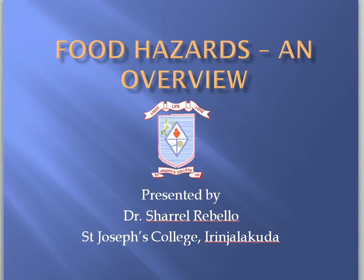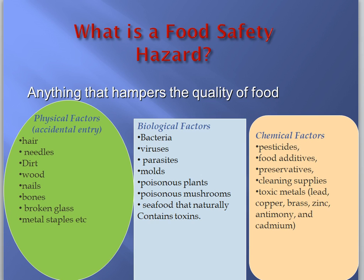Let's continue with food hazards - an overview. A food hazard is anything that hampers the quality of the food. As we have come across examples, we can see that they could be physical factors which happen to enter due to accidental entry.